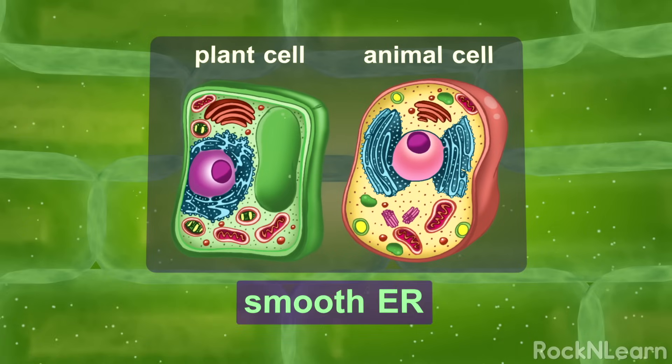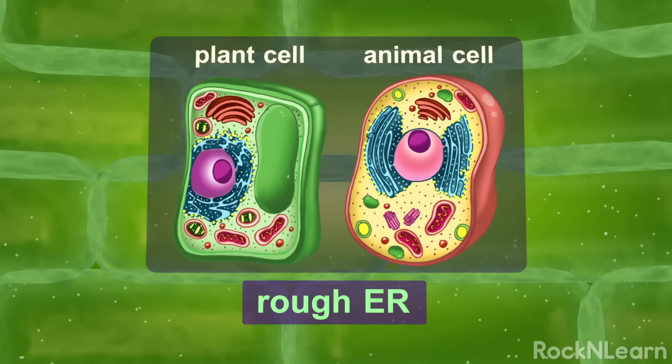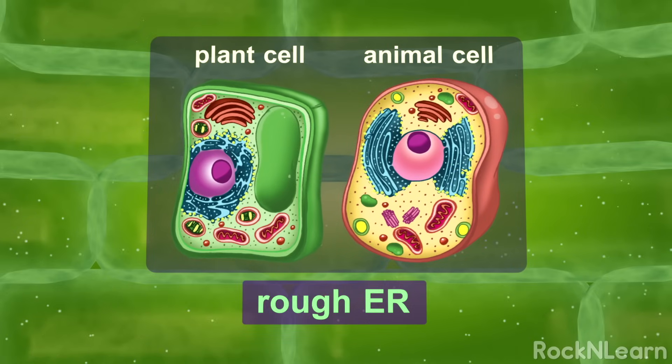Some of the ER is smooth and some is rough. The rough ER has ribosomes on the outside.